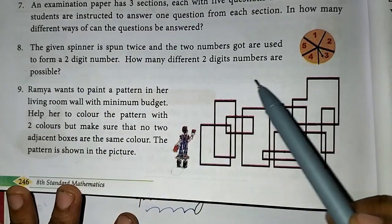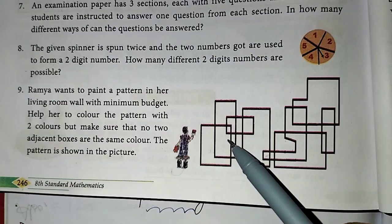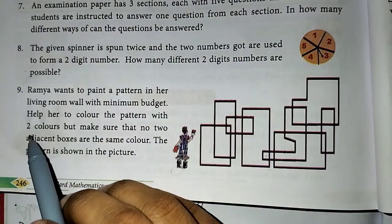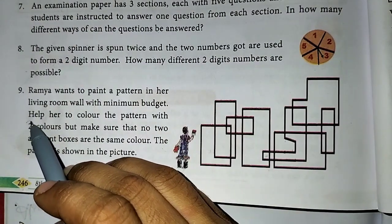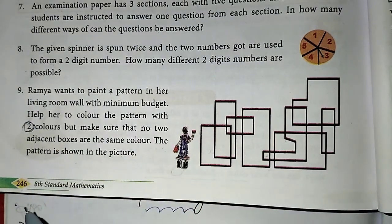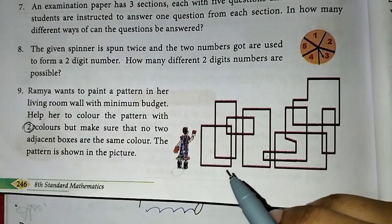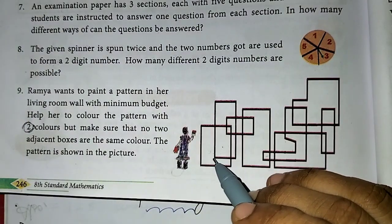You can paint a pattern in the living room with minimum budget for two colours. That is, two different colours in the adjacent boxes. In the adjacent box, the same colour cannot be used. In the adjacent box, you can use red and orange.